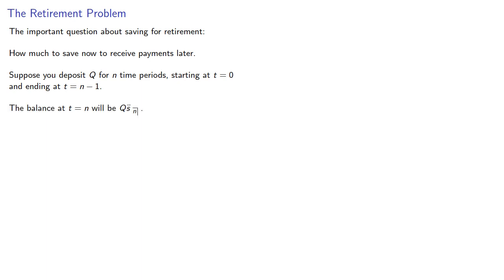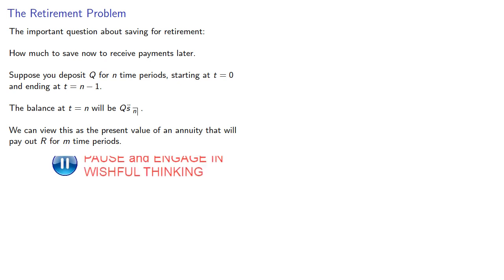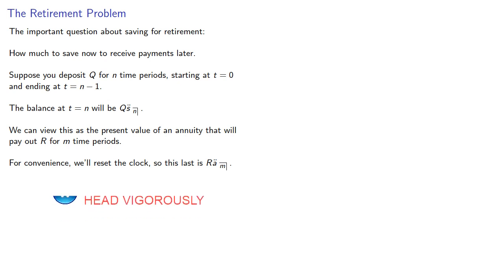The balance at t equals n will be q s double dot angle n. We can view this as the present value of an annuity that will pay out r for m time periods. So for convenience we'll reset the clock so this has present value r a double dot angle m. And we want q s double dot angle n to equal r a double dot angle m. Essentially we're using the accumulated holdings to buy the annuity.